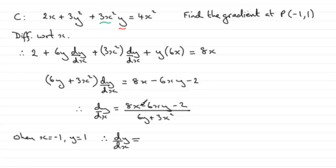So we've got 8 times minus 1, so that's going to be minus 8. We've got minus 6 times x, which is minus 1, and times that 1 there. So that's going to be plus 6.